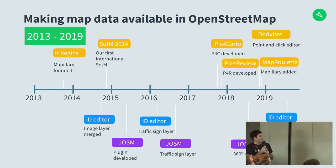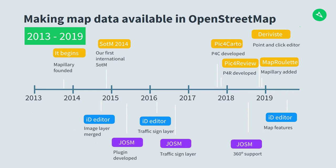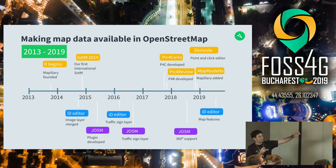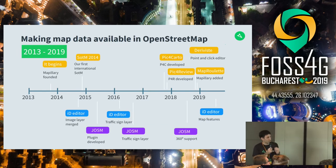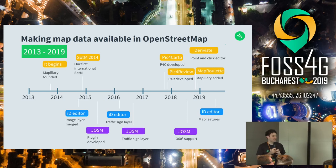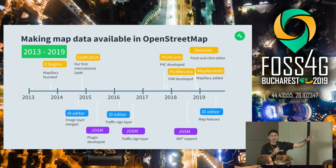Going through the timeline quickly: founded in 2014, the image layer was merged, a traffic sign layer was integrated, and this happened for both iD and JOSM. More recently there have been some interesting side projects — things other people developed that leveraged street-level imagery and data — including Pick4Review, Deriviste, and MapRoulette, all developed by community members using developer tools. What we're really excited about soon is map features: all those different objects I talked about being available in iD Editor.